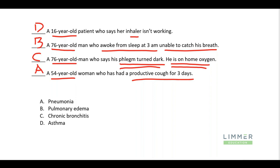See how we're using clues here? Don't ever overlook the age. Inhaler isn't working — that gives us asthma. Awoke from sleep at 3 a.m. unable to catch his breath — classic pulmonary edema. Phlegm turned dark on home oxygen — that's chronic bronchitis. And productive cough for three days — pneumonia. Everything makes a difference. Every clue in these makes a difference.